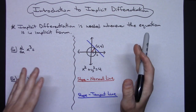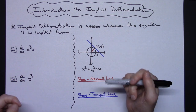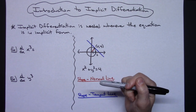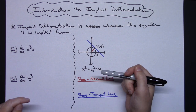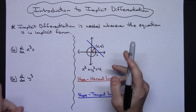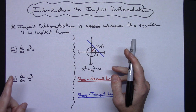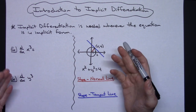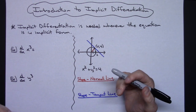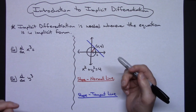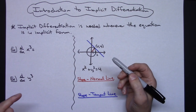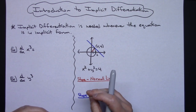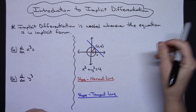To find the derivative implicitly, you need to realize that the differentiation is taking place with respect to x. This means that when you differentiate terms involving just x, you can differentiate as usual. However, if you differentiate terms involving a y, you must apply a chain rule.